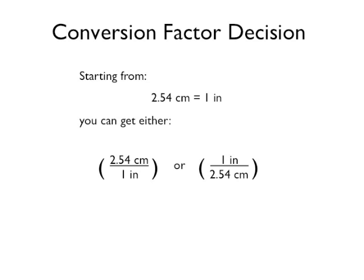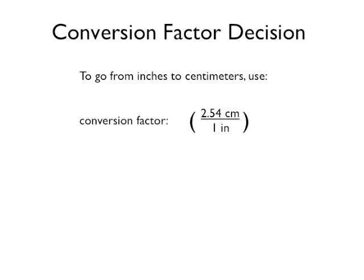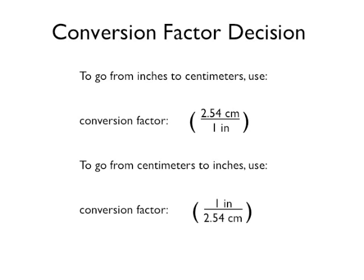You may have noticed that there are actually two ways to make the ratio from the equivalent statement. The first will help you convert from inches to centimeters, while the second version will help you convert from centimeters to inches. To figure out which is the correct one to use, look at which unit is in the numerator and which unit is in the denominator.